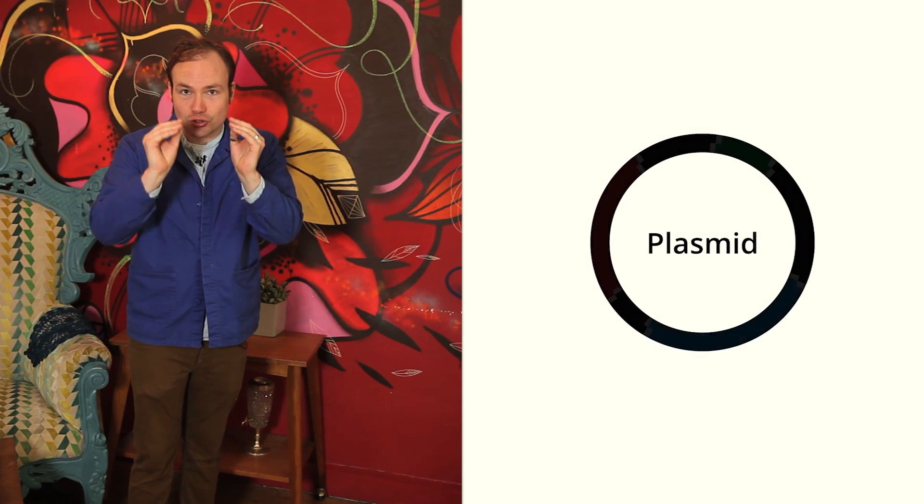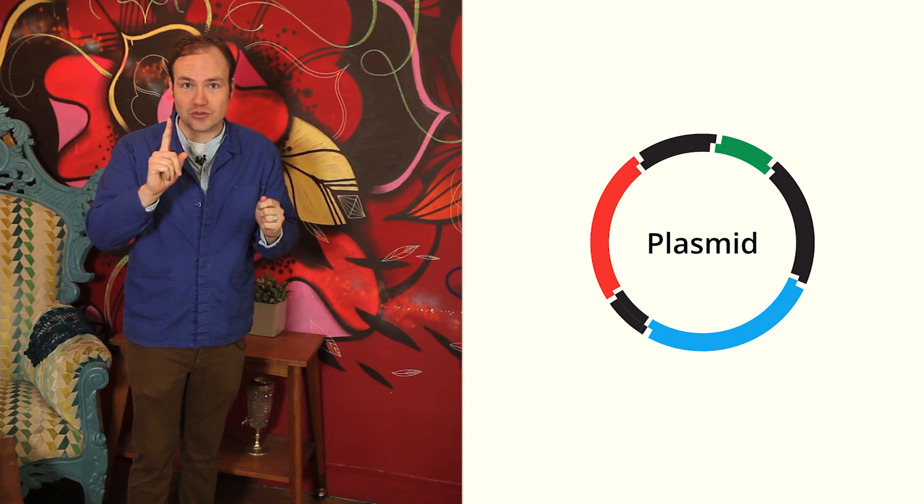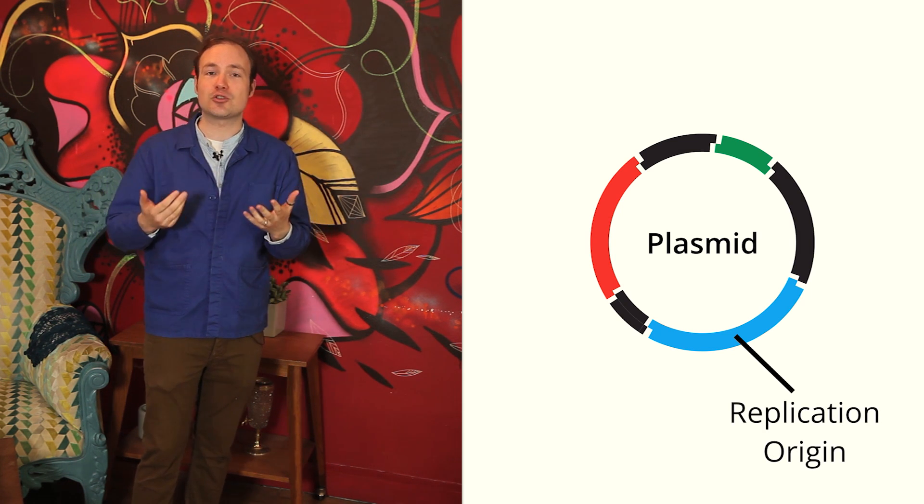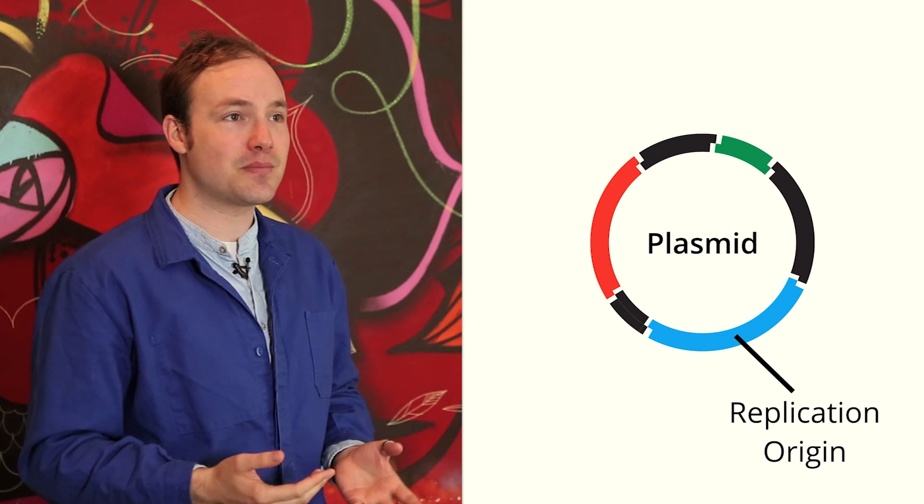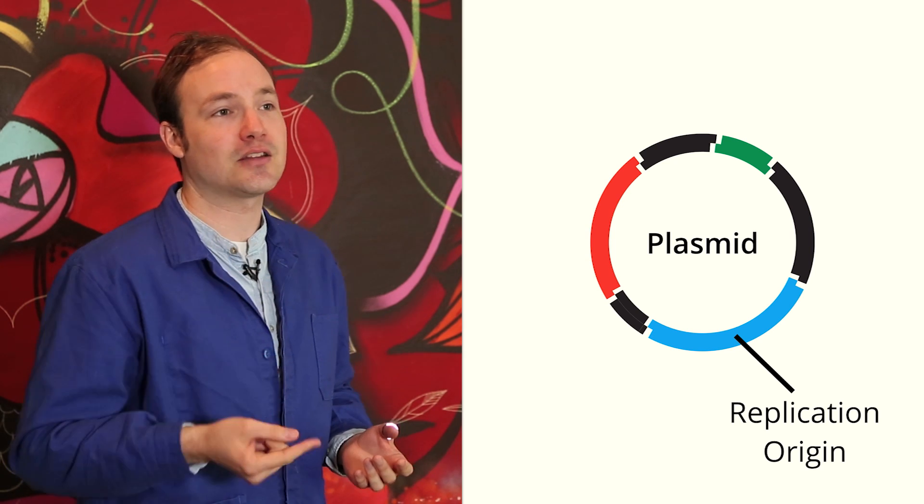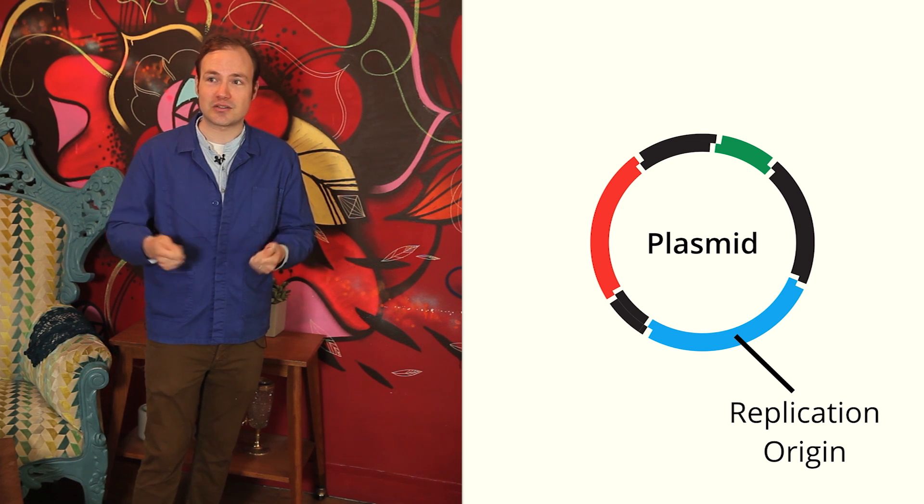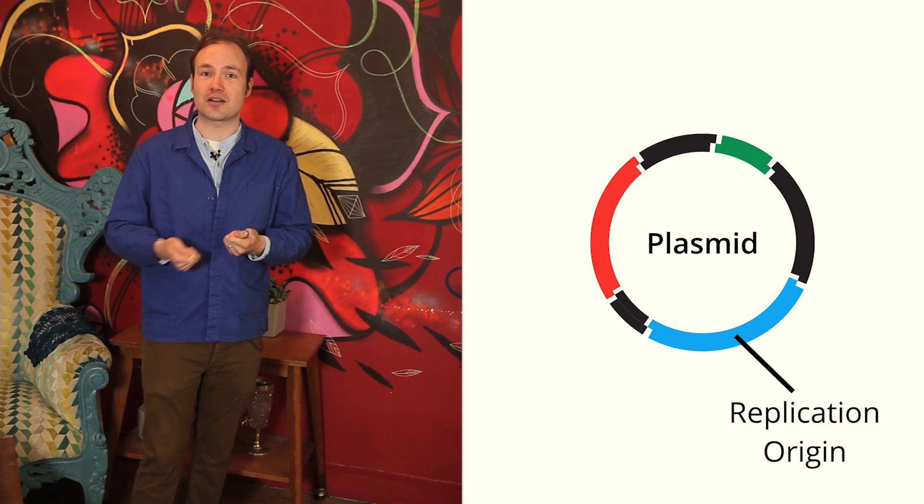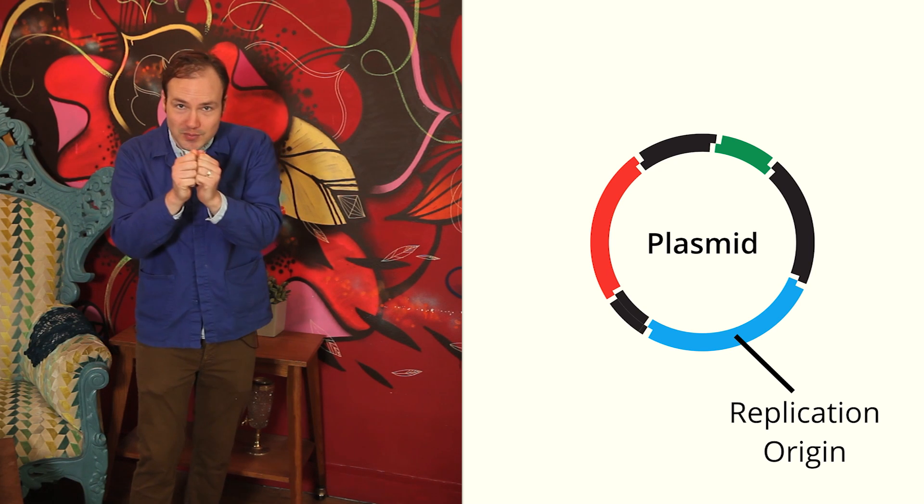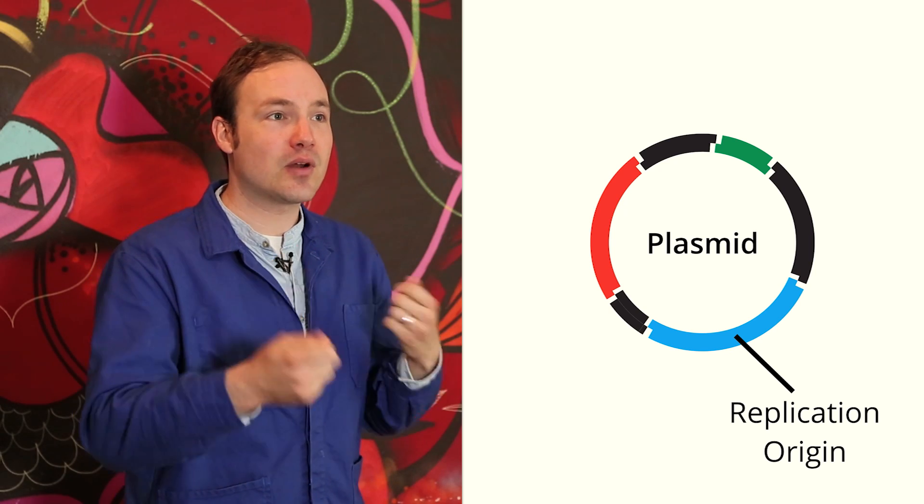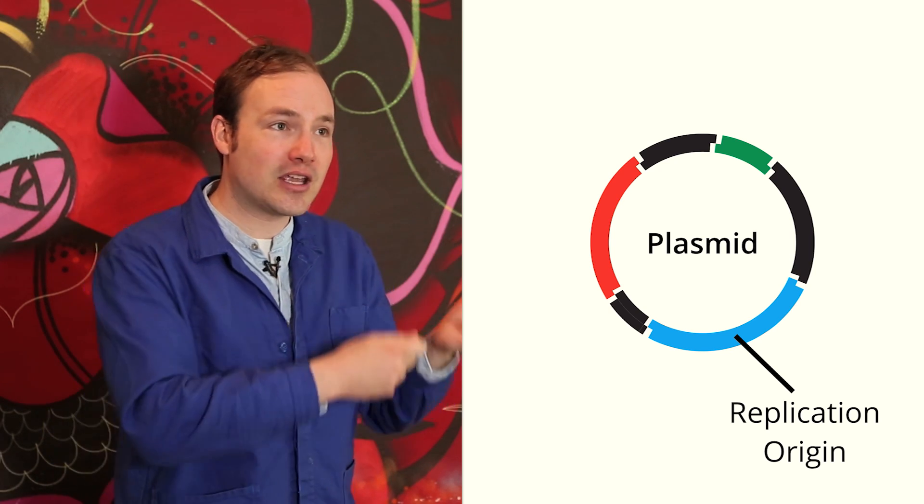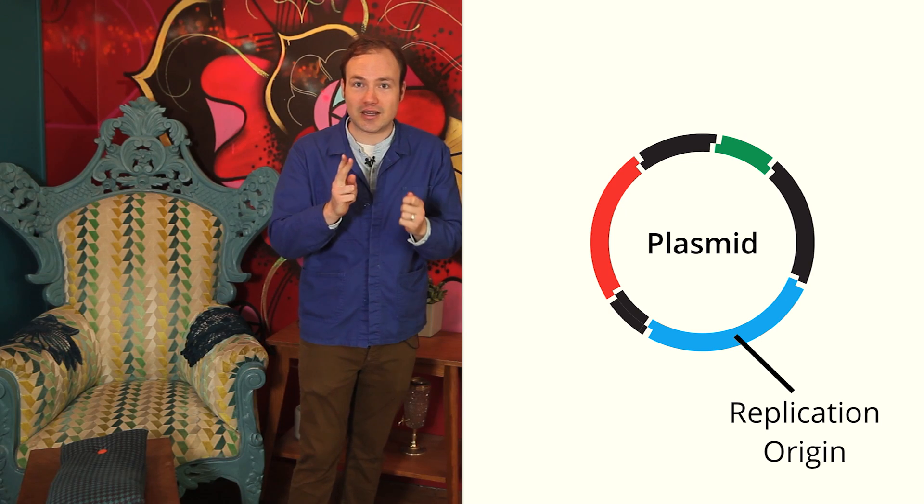Plasmids contain three key functional elements. First, the origin of replication. The replication origin is a DNA sequence that tells the bacteria to start copying that strand of DNA. DNA replication is a complex process, but luckily, very little of that complexity is coded in the plasmid DNA. Instead, the replication origin draws on the replication machinery of the host cell.